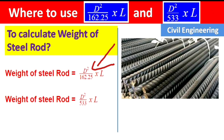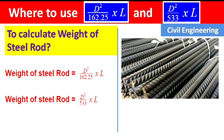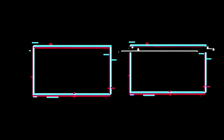To summarize: use d² / 162.25 × L when the length is in meters, and use d² / 533 × L when the length is in feet. In both cases, the diameter should be in millimeters. Please like this video and subscribe to the channel for new updates about civil engineering.